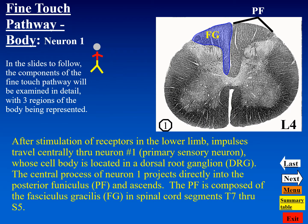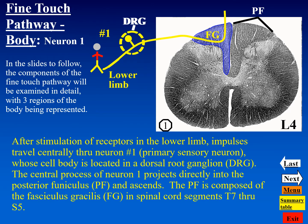Starting with the tour of the fine touch pathway, we take fine touch information from the lower limb. The cell body of neuron one is located in the dorsal root ganglion at this level. All neuron one cell bodies in this pathway from the body are located in dorsal root ganglia. The central process enters the spinal cord through the dorsal root and immediately becomes part of the posterior funiculus — at this level the fasciculus gracilis. These fibers are somatotopically organized, with the lower limb most immediately positioned and the lower trunk a little lateral to that.